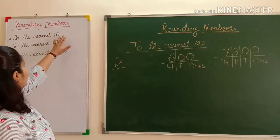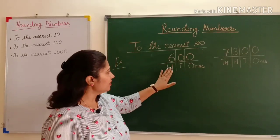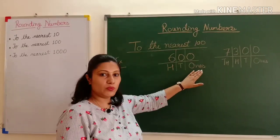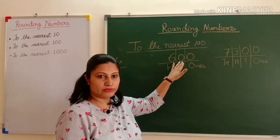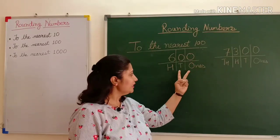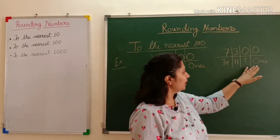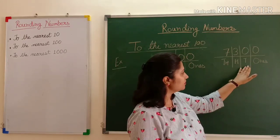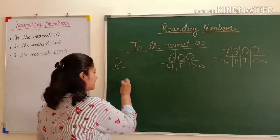Now let's do rounding numbers to the nearest hundred. Here are some examples. This three-digit number is 600 — in its ones place and tens place, both have zero. When we round off to the nearest hundred, it means both of those places have zero. Here is a four-digit example: 7300 — its ones place and tens place are also both zero. Let's see how to do this.